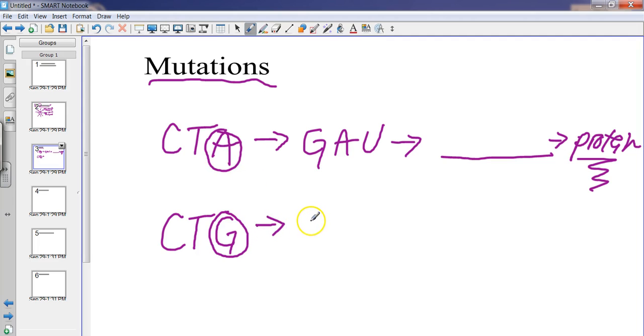And that would transcribe into GAC. And then that might make a different amino acid than this one. And so as a result, it would make a different protein. And then that would result in maybe a different phenotype. So this could be maybe straight hair. This could be curly hair. So mutations, like substitution mutations,